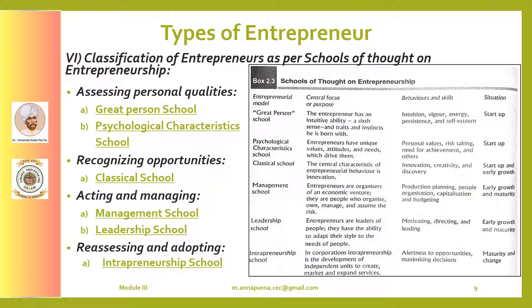The great person school of entrepreneurship believes that an entrepreneur is born with an intuitive ability, six sense, traits and instincts. The successful entrepreneur is described as having a strong drive for independence and success with high levels of vigor, persistence and self-esteem. This great person has an exceptional belief in himself and his abilities. Attention is paid to such traits as energy, perseverance, vision and single-mindedness, or abilities such as being inspirational or motivational.